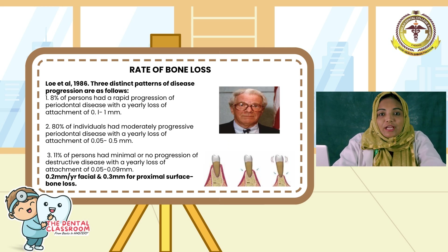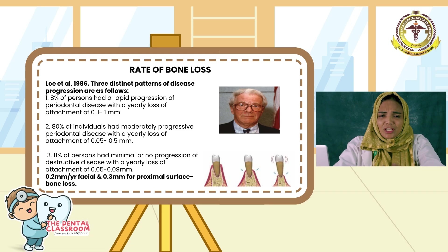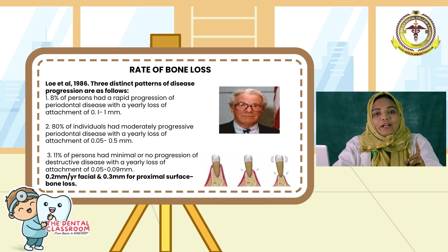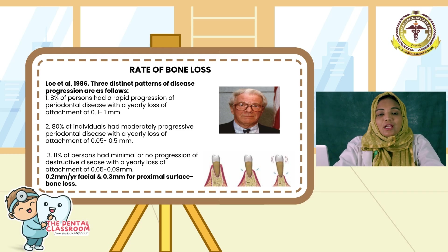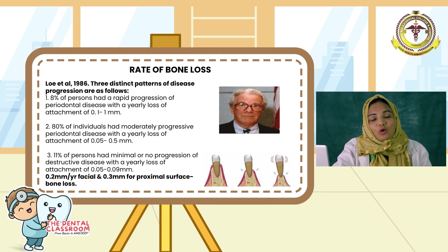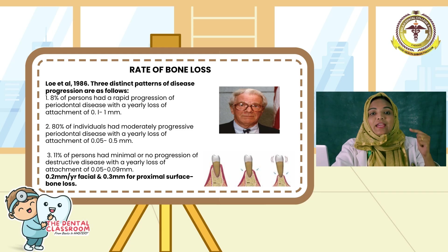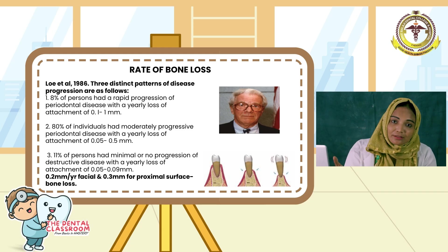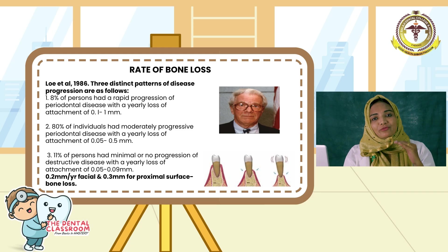Moving on to rate of bone loss. Harald Löe, a renowned periodontist, conducted a study in Sri Lanka. He was curious to gather Sri Lankan tea laborers who had never practiced oral hygiene in their lifetime. He took 480 individuals and followed them over a period of 20 years for periodontal disease progression. He was able to do the final examination for 161 individuals to assess disease progression. It instills that periodontal disease isn't a constant downward spiral — yet it is an episodic burst alternating between periods of activity and quiescence. The study proved that our body always fights back, deploying defense mechanisms, thereby slowing the rate of progression.